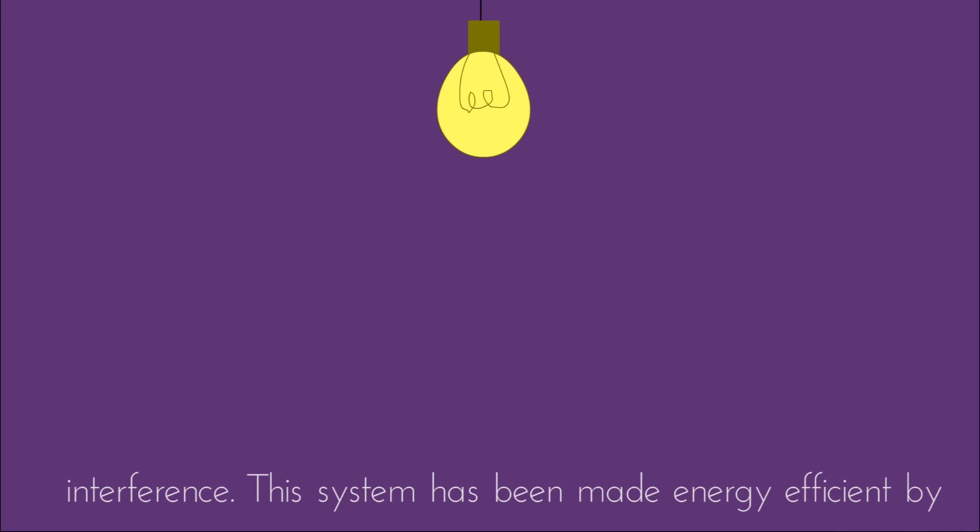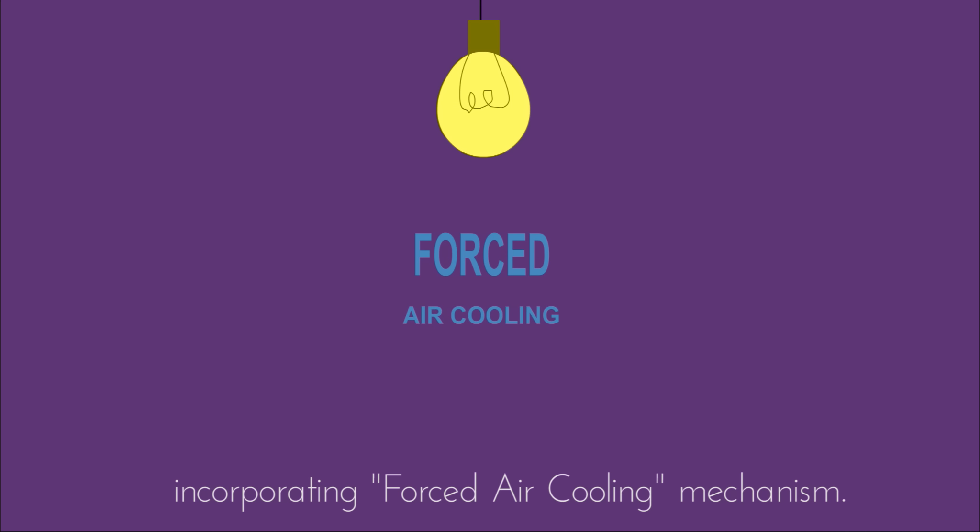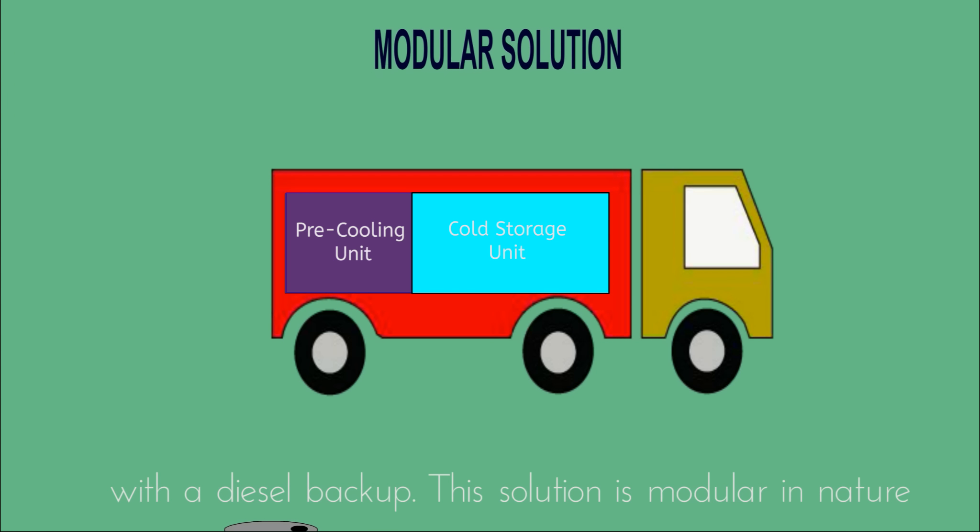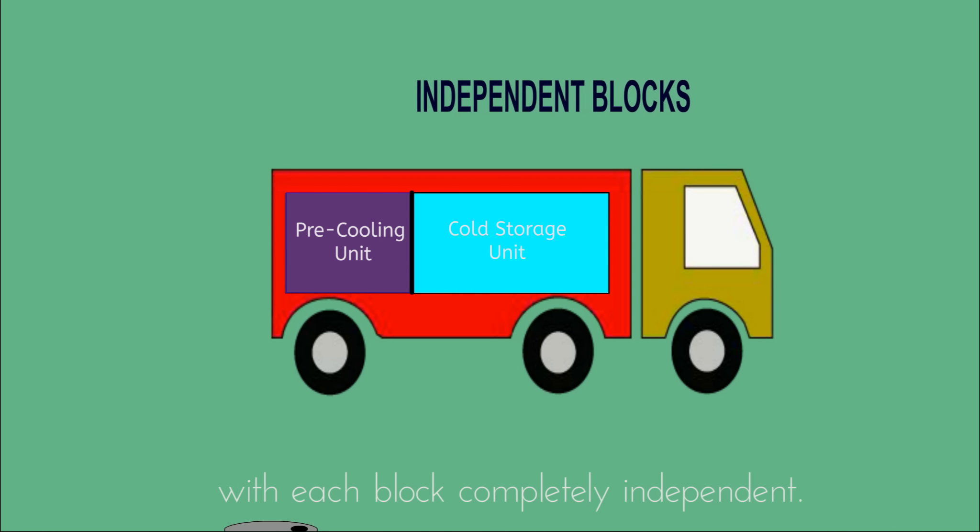This system has been made energy efficient by incorporating forced air cooling mechanism. There is also a cold storage module which is solar powered with a diesel backup. This solution is modular in nature with each block completely independent.